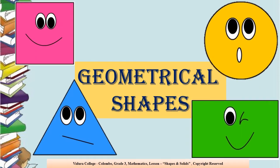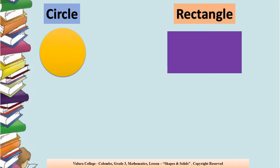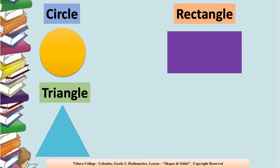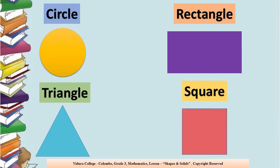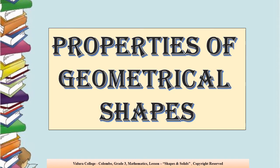We are going to learn about geometrical shapes. We'll see what shapes we are going to learn today: circle, rectangle, triangle, square. Properties of geometrical shapes — what do you mean by properties, children? Properties means a thing or things belonging to someone or something. We'll see the lesson.